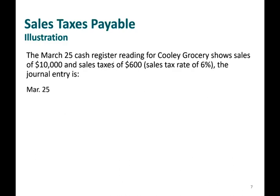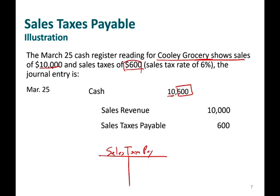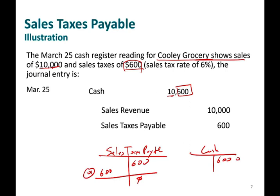Let's take a look at an example. On March 25th, the cash register reading for this grocery shows sales of $10,000 and sales tax of $600. We collected $10,600 in total. We credit sales revenue $10,000 — that's the sales — and credit sales taxes payable $600, creating a $600 liability. Eventually, when we send that money to the state, we debit sales taxes payable $600 and credit cash $600. We're left with $10,000 cash and $10,000 revenue.